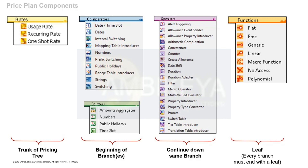The one-shot rate is something that happens just once — for example, a one-time activation fee of 10 euros for a mobile service plan. Technically this could be a one-shot rate triggered exactly once. However, within the BRIM context, one-shot rates are generally used only for technical reasons and are not commonly used in Convergent Charging.